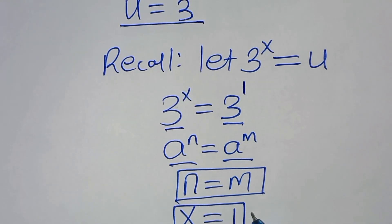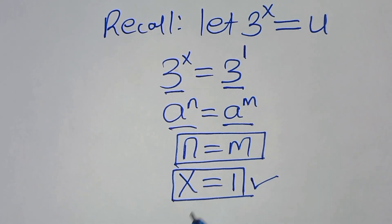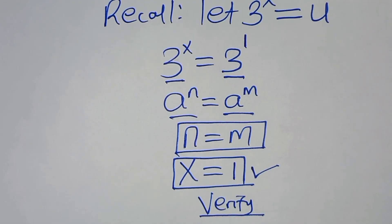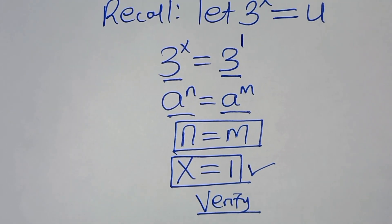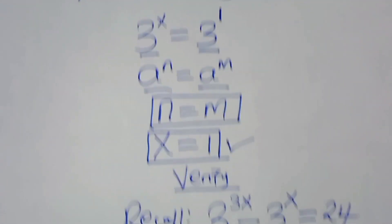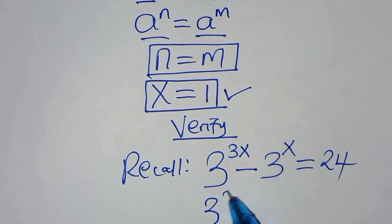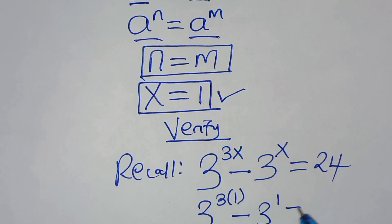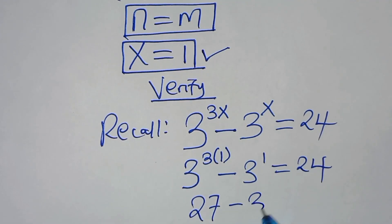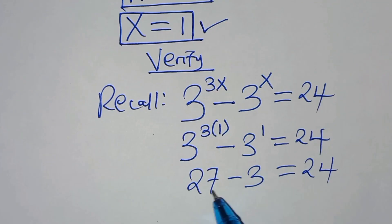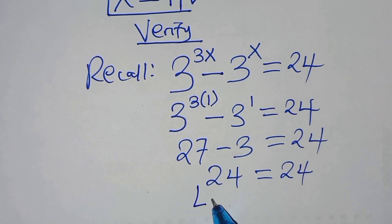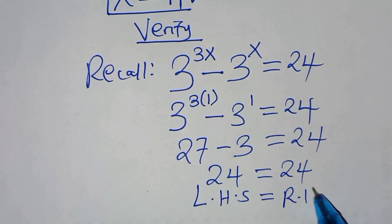Now, let's verify that this value of x satisfies the equation. If you recall, we have 3 to the power 3x, subtract 3 to the power x, this will give us 24. Substituting x equals 1, we have 3 to the power 3 times 1 minus 3 to the power 1, this is equal to 24. So 3 to the power 3 is 27, subtract 3, this is equal to 24. So 27 minus 3 is 24, which equals 24. The left hand side equals the right hand side.